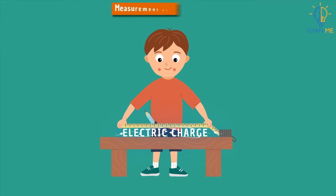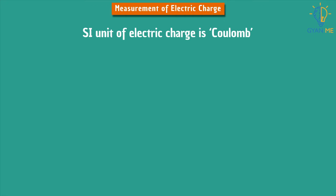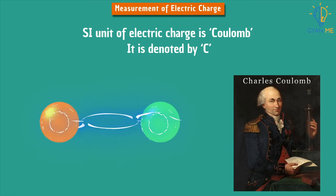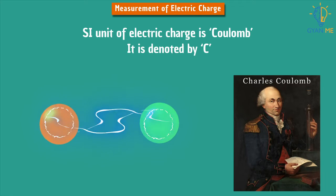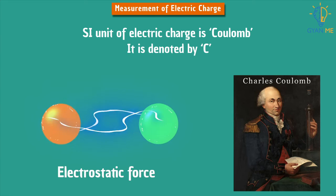Now let us learn how electric charge is measured. The SI unit of electric charge is coulomb, denoted by the symbol capital C. The word coulomb is named after the French physicist Charles Coulomb, who found that the electrostatic force exists between two electrically charged particles. The force exerted here is called electrostatic force.